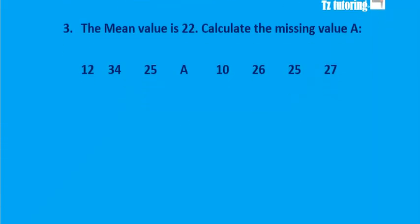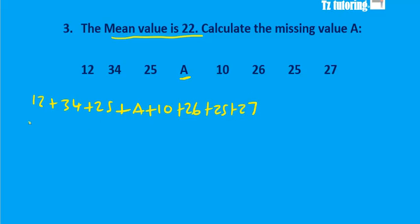Let's move on to the last example. This one is a little bit challenging. Again, this is an inverse question because they're not asking you to calculate the mean. They give you the mean, the mean is 22, and you have to calculate A, one of those missing values. We know how to calculate the mean. We add all the values: 12 plus 34 plus 25 plus A plus 10 plus 26 plus 25 plus 27, and we divide it by